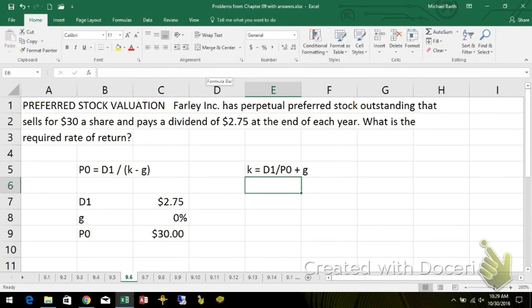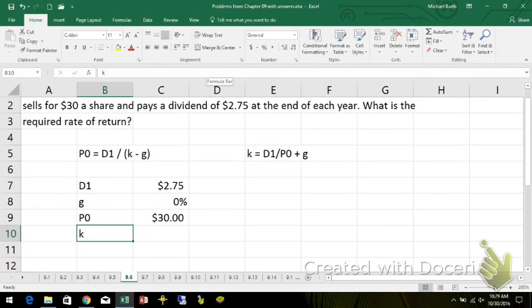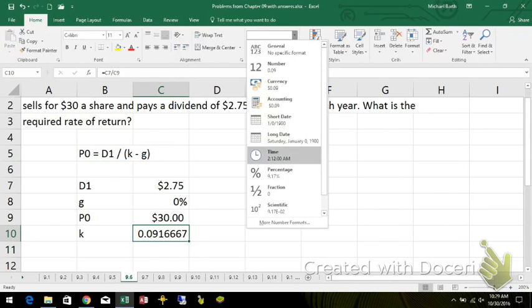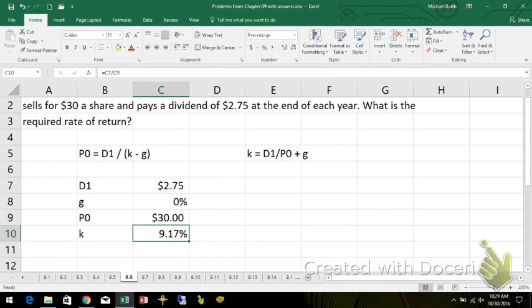Since G is zero on this, the required rate of return is simply the dividend divided by the share price. That's the rate you're going to earn on this stock, or you expect to earn on this stock for the foreseeable future.